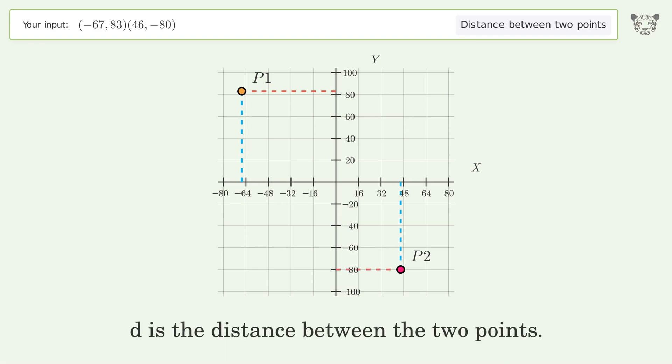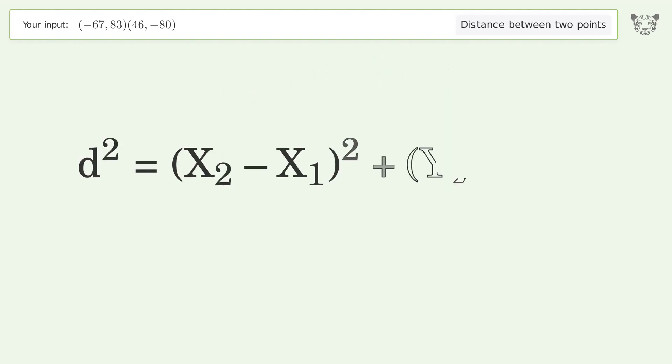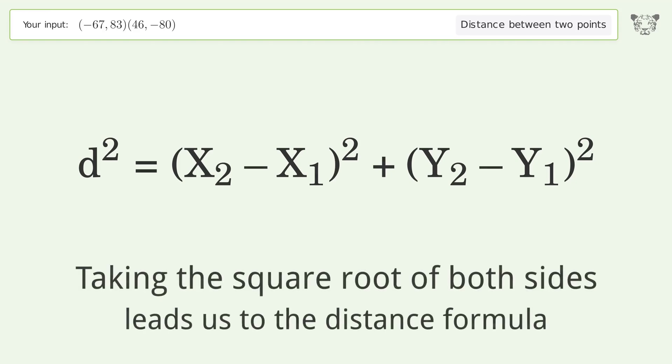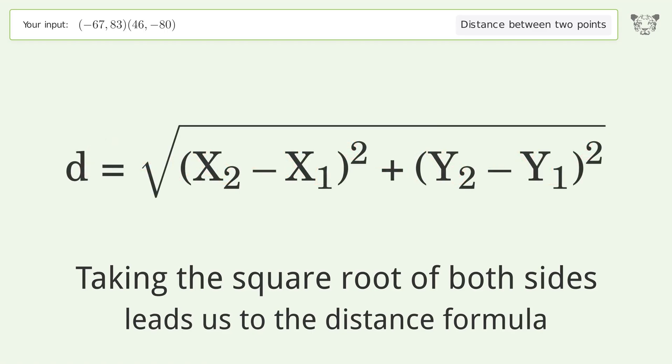d is the distance between the two points. The Pythagorean theorem tells us that d² = (x2 - x1)² + (y2 - y1)². Taking the square root of both sides leads us to the distance formula.